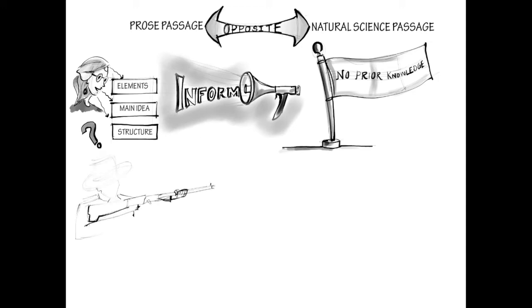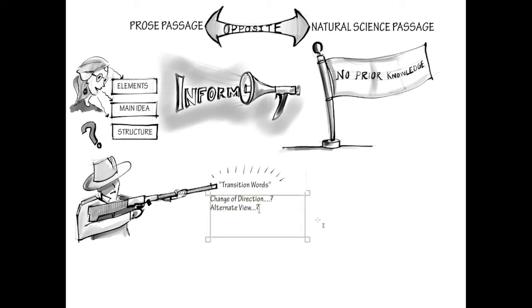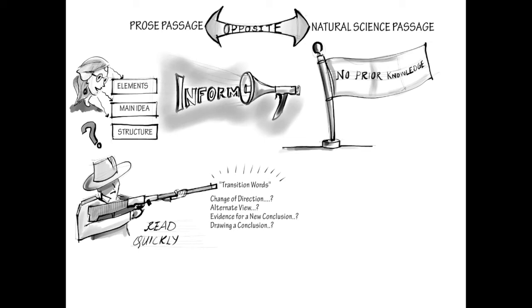So how do you stay focused while reading? You want to be on the hunt for transition words. Is the author about to veer in a different direction, share an alternate point of view, give evidence to support a conclusion, or perhaps draw a conclusion based on the evidence given? This is what transition words tell us. And while we are focusing on these aspects, we are also reading quickly — this is probably the fastest you will read out of all the other types of passages.